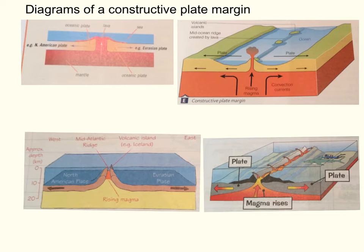Here we have four diagrams to summarize what is happening in a constructive plate margin. So diagram one, as shown earlier, nice and simple. We have got two plates, the arrows showing what direction the plate is moving. We've got a gap going up the middle where the magma rises. And then on the surface, as that magma cools, it becomes lava, making a volcano.